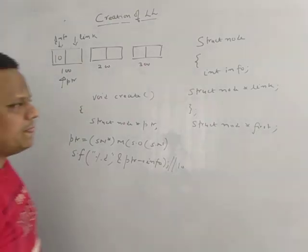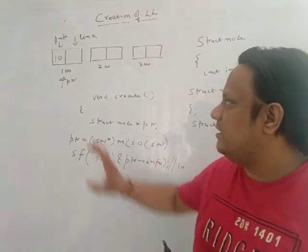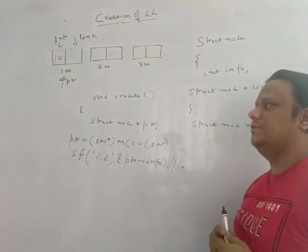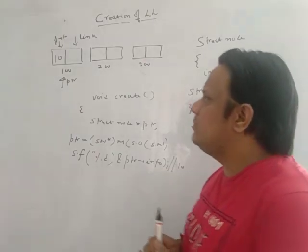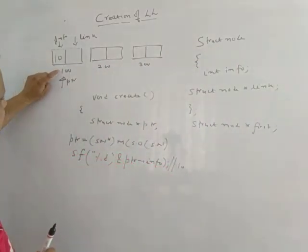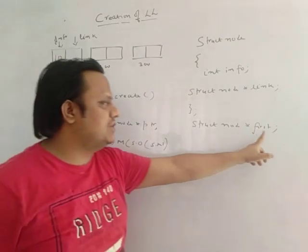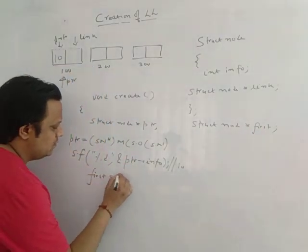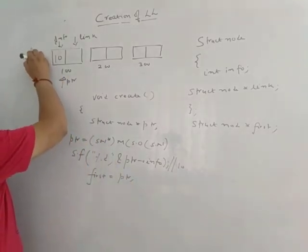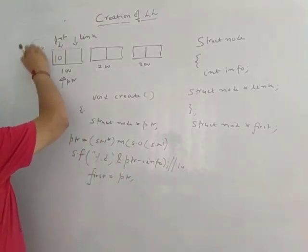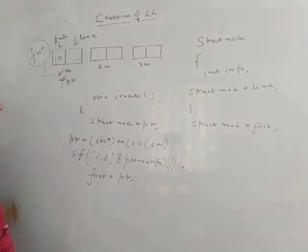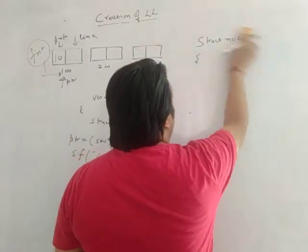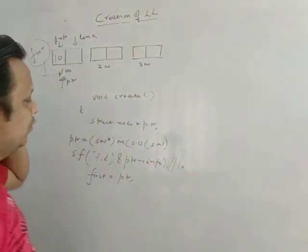Now the basic concept is: this is a variable called first, and this first pointer points to the first node of the linked list. Since you have created this first node, you want to assign its address to the variable first. So you simply write first = ptr. Your first node is now created.